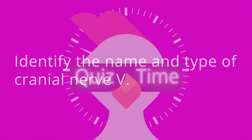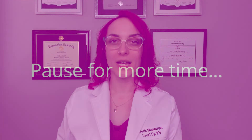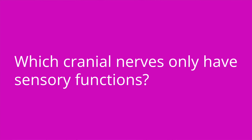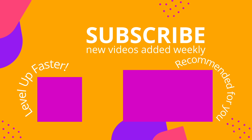Let's test your knowledge with a couple quiz questions. Identify the name and type of cranial nerve 5. — The trigeminal nerve, which has both sensory and motor components. Which cranial nerves only have sensory functions? — Cranial nerves 1, 2, and 8: olfactory, optic, and vestibulocochlear. I hope this was a useful review. Leave me a comment, let me know something you learned, and I'll see you in the next one. Thanks and happy studying!